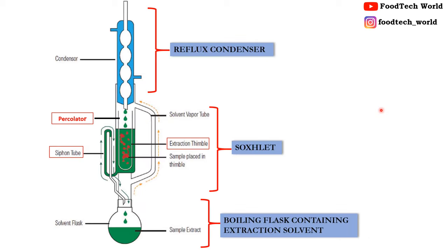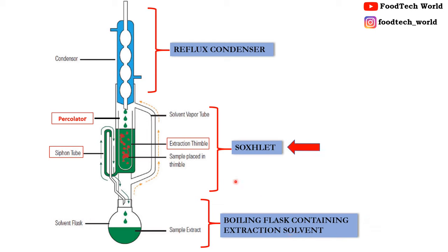We can extract fats, lipids, or bioactive compounds by using the Soxhlet apparatus. Here is a picture of the Soxhlet apparatus, and you can see that the apparatus is divided into three parts: the bottom is a round flask containing the extracting solvent of interest, the middle one is the Soxhlet chamber, and the topmost is the reflux condenser. The middle Soxhlet chamber is further divided into a thimble, siphon tube, and percolator.